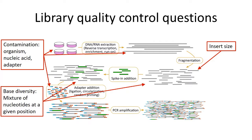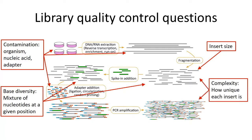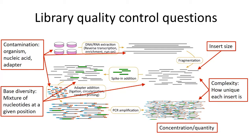Another point of troubleshooting might be base diversity, which is the mixture of nucleotides at a given position. This is hard to prepare for other than making sure your indexes are relatively well distributed in terms of base diversity, but it is something that could be a problem in your sequencing run to come back and think about. Another thing to think about is complexity, which is how unique each insert in your library is — this is very protocol dependent. In some libraries, low complexity is a sign of PCR over-amplification or some kind of bias in how your library has been processed. Finally, concentration or quantification of your library is something you can assess in a variety of ways, and your sequencing core should be able to help you with.